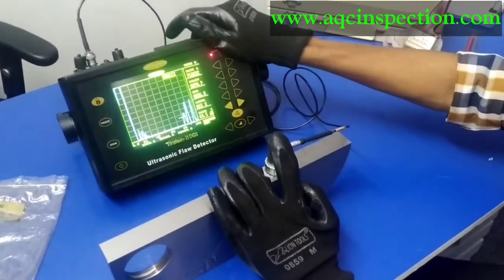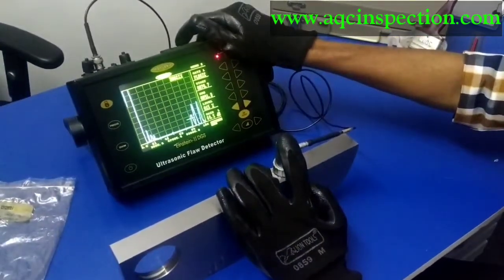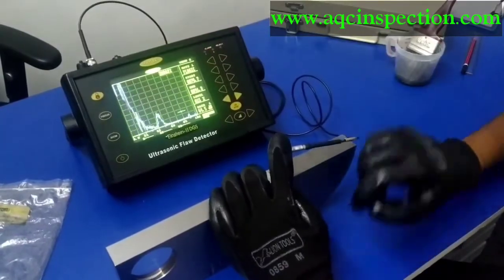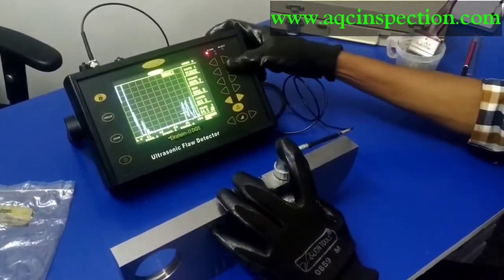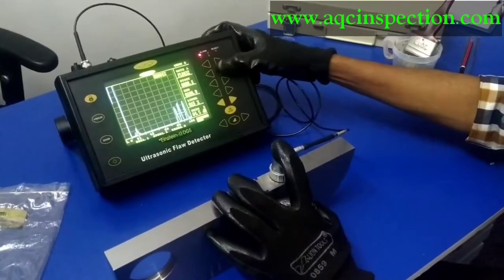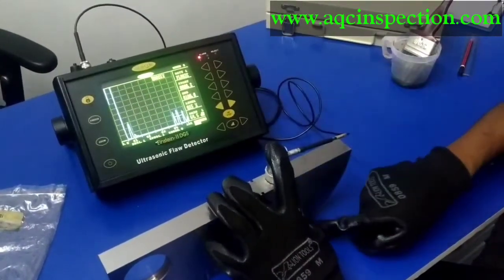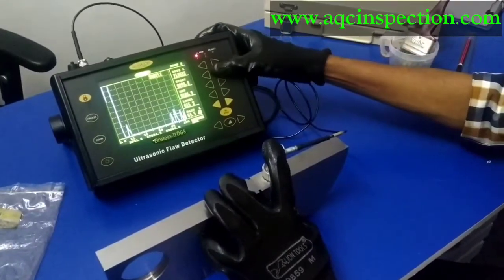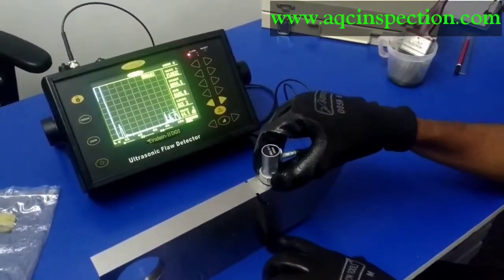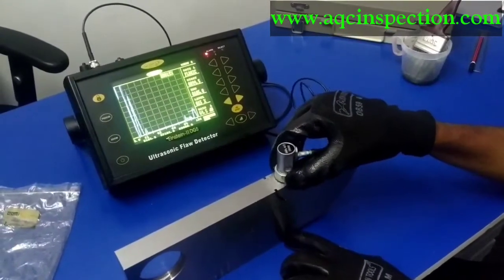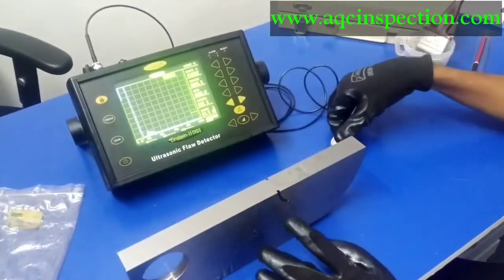So the first backwall, the first echo I am receiving is 85.6 which is right, this one. This is the first echo. And the second one that I am getting is 91 which is this surface right here. And the last one is 100 mm, which is the backwall of this material. This is what we call a resolution check.